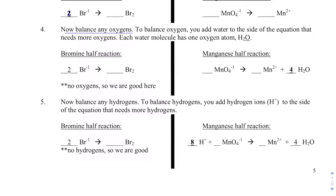Now I'm going to balance hydrogen. We're going to assume these reactions are under acidic conditions unless told otherwise. To balance hydrogens, we add hydrogen ions, H⁺. The bromine side has no hydrogen, so we're good. For the manganese half reaction, we just added 8 hydrogens with our 4 waters, so we must need 8 H⁺ on the other side.